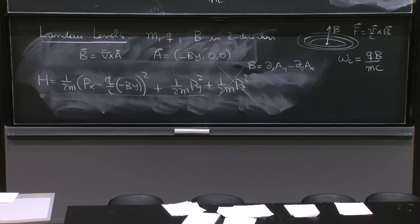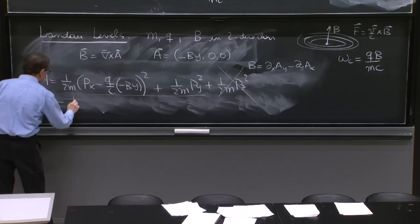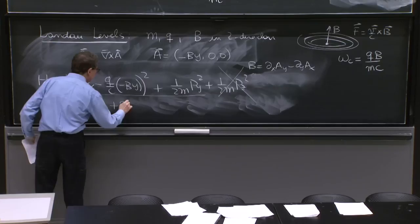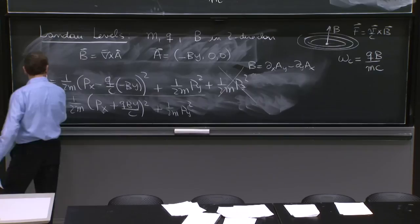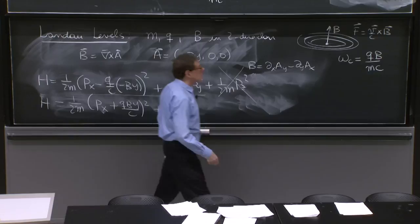OK, so our Hamiltonian is here. Let's write it once again. 1 over 2m px plus q by over c squared plus 1 over 2m py squared.